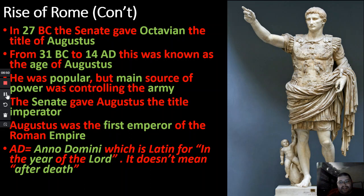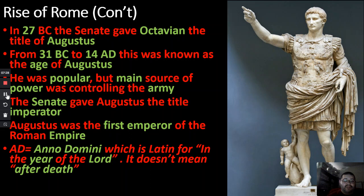Augustus is the name most historians know him by, not his birth name Octavian. From 31 BC to 14 AD is known as the Age of Augustus. Just like his great uncle, he was very popular, and his main source of power was controlling the army. The senate then gave Augustus another title — 'Imperator' — meaning Emperor. So Augustus was the first Emperor of Rome, not Julius Caesar. That's a big misconception.